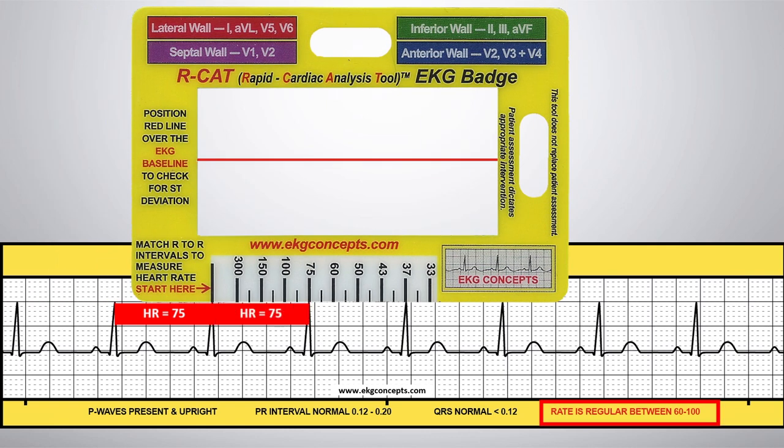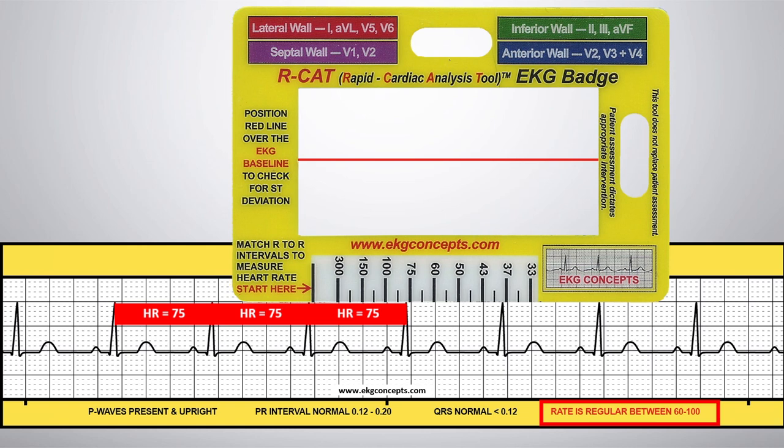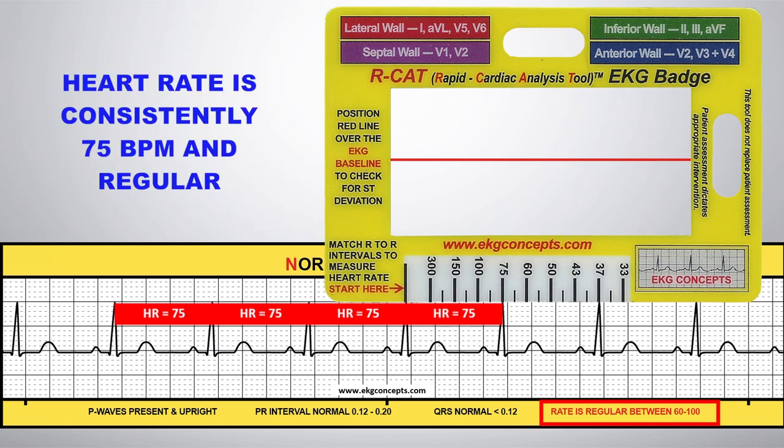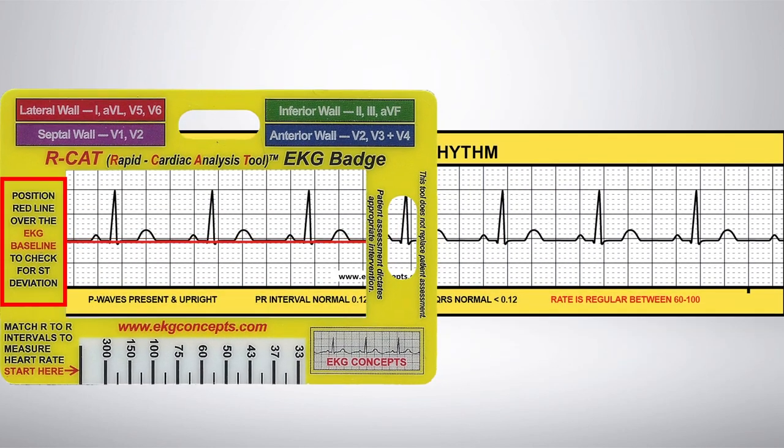Match the R to R intervals to measure the heart rate. The heart rate is consistently 75 and within the normal range of 60 to 100 beats per minute.